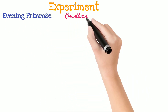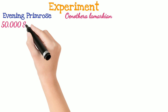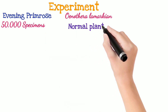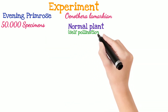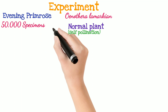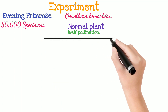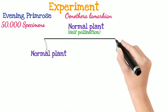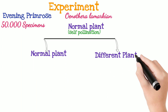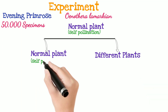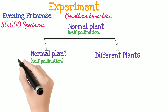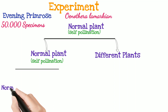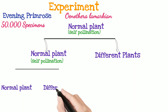scientifically named Oenothera lamarckiana. He took the normal plant and performed self-pollination. Seeds are formed, and from the seeds, two types of plants are formed: normal plants in majority, and different plants fewer in number.